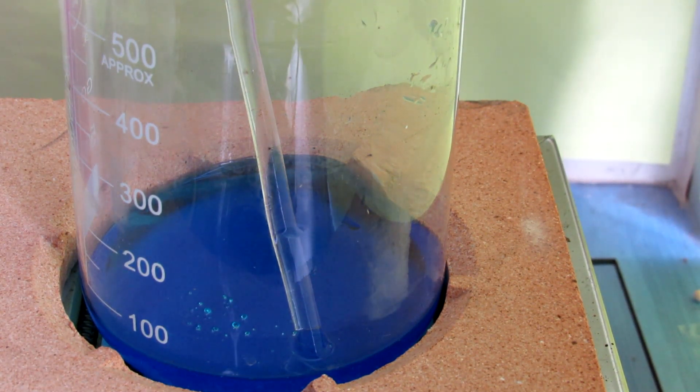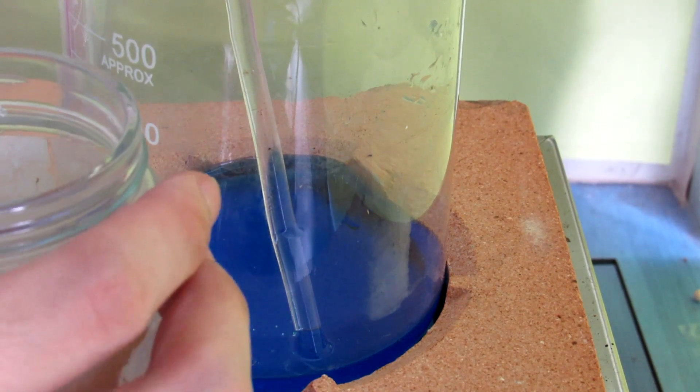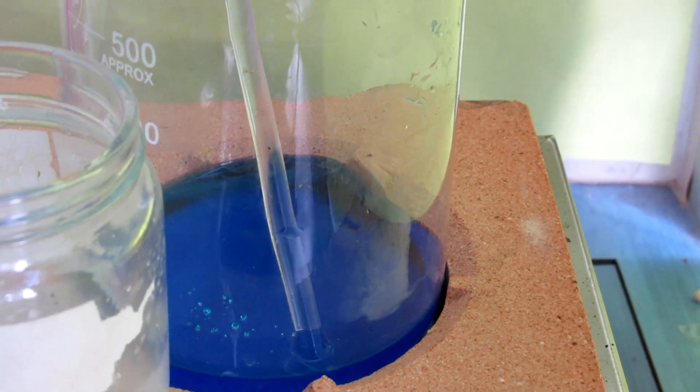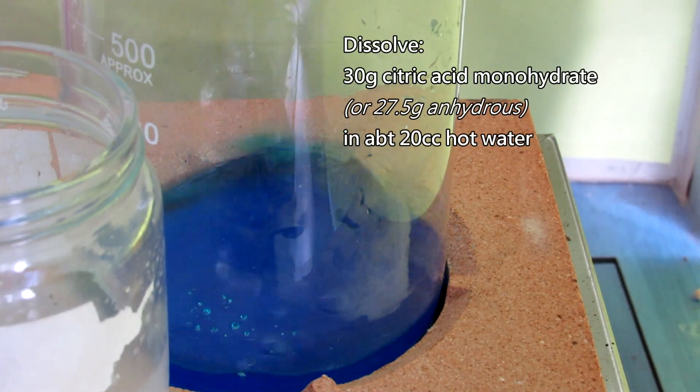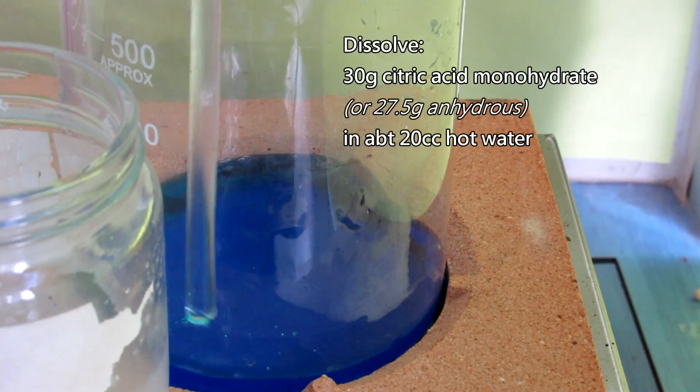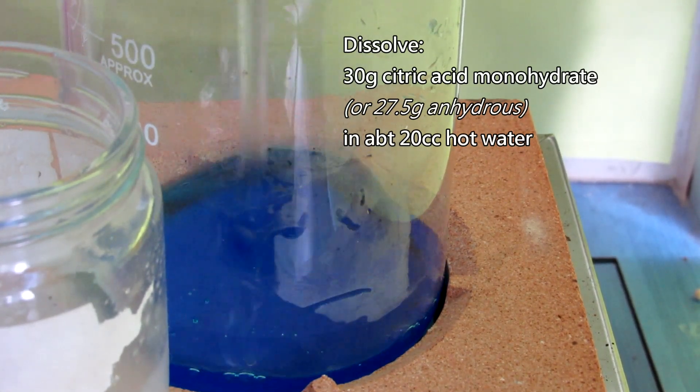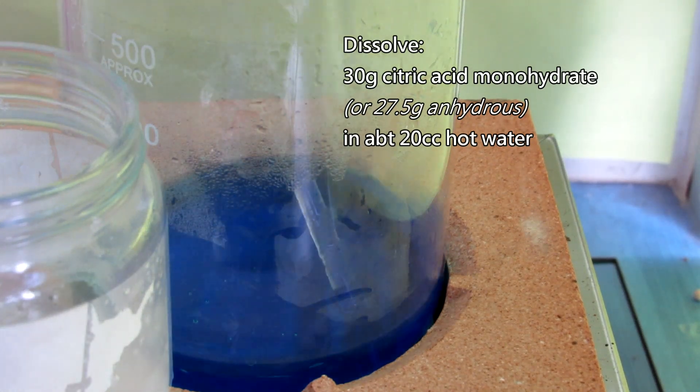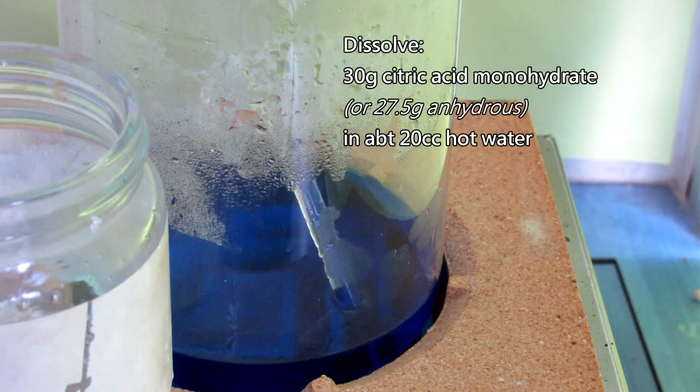While waiting for it to dissolve, I prepared some citric acid solution in another beaker. This was done by dissolving 30 grams of citric acid monohydrate in about 20 cc of water. I also heated the solution on the same heater to speed things up.